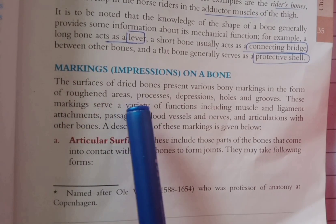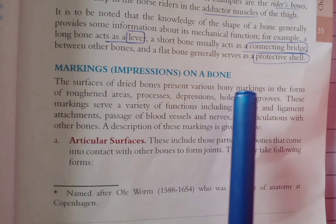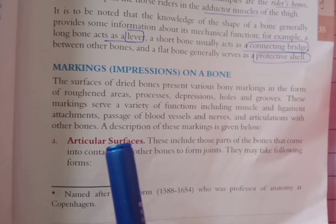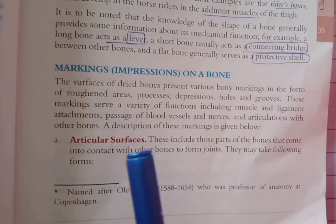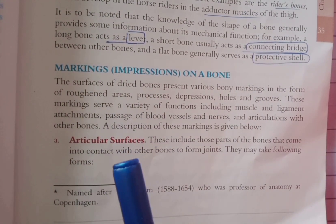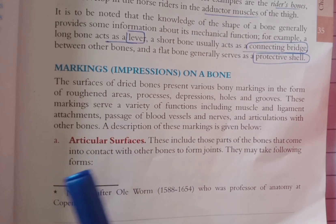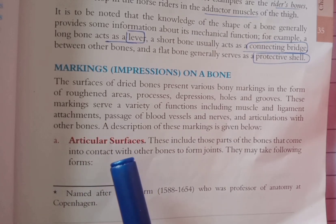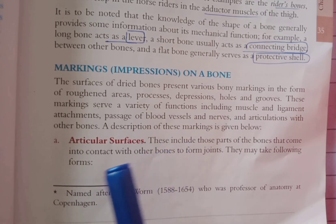Hello everyone. We have read chapter 3 and today we have a topic of markings on our bone. First of all, we have articular surfaces. In articular surfaces, there are those bones involved in which joint formation and movements are involved.